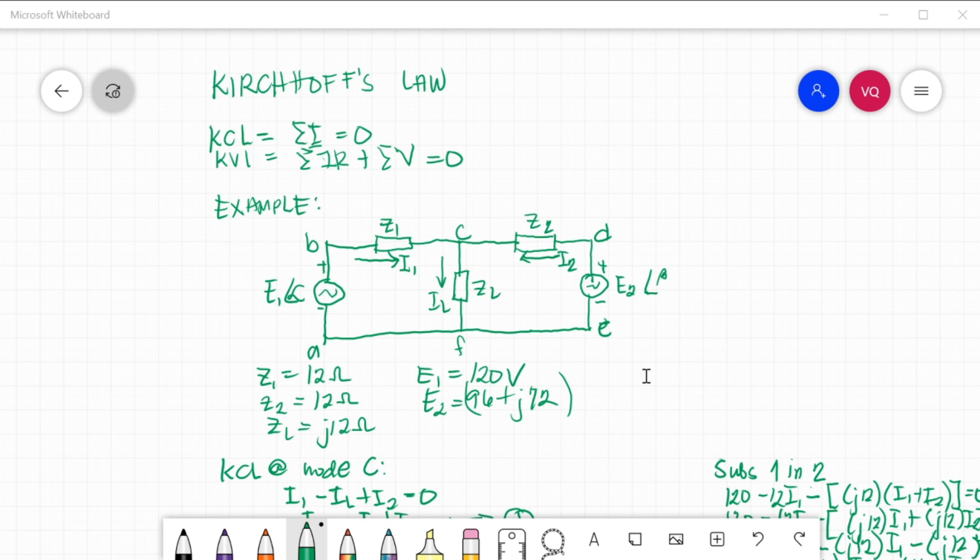Next one is Kirchhoff's Voltage Law. According to this law, the phasor sum of the voltage drops across each of the conductors in any closed path or mesh in a network plus the phasor sum of the EMFs connected in that path is zero. In other words, it is the summation of the voltage drops of the conductors plus the summation of the EMF or the source voltage of the circuit. It is equal to zero.